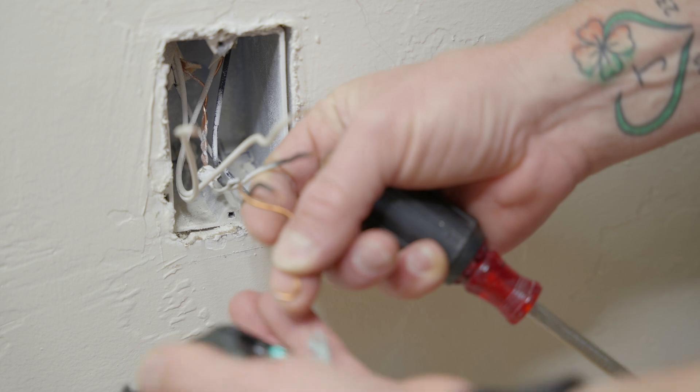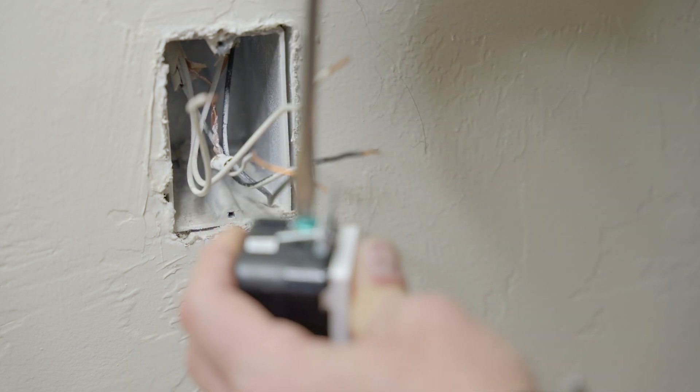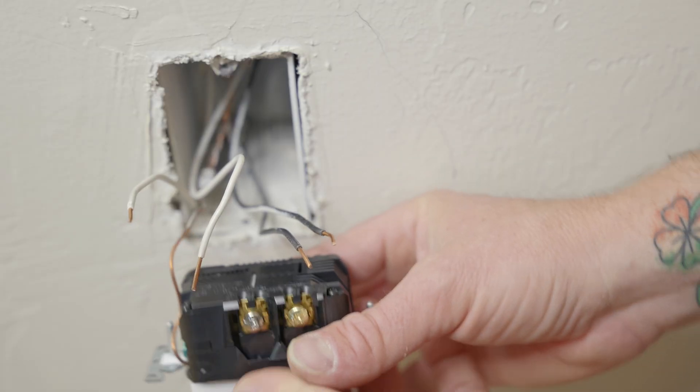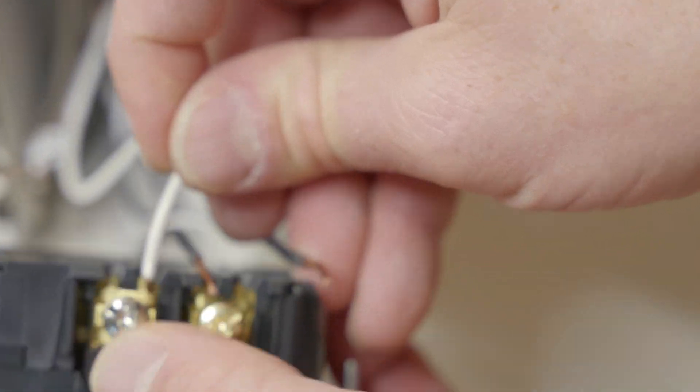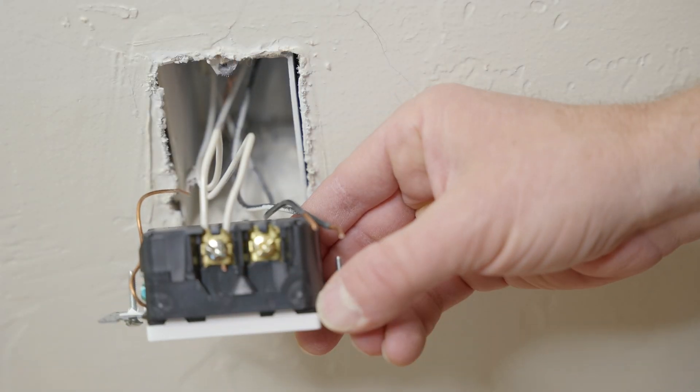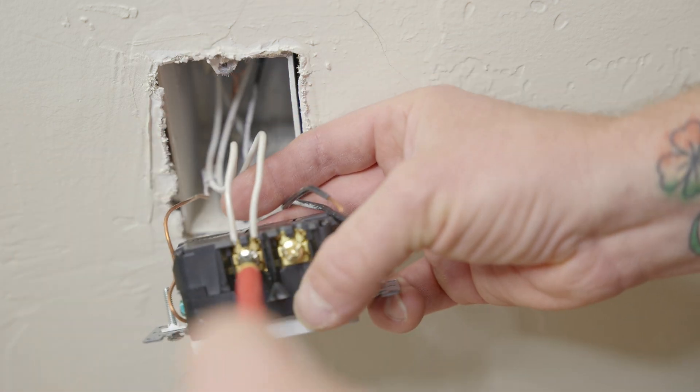Of course first we want to hook our ground onto the green lug as always in a clockwise rotation. We'll hook up our two white neutral wires and they will both go in between two plates. And then we will carefully lock down the terminal screw and then give that a good tighten.